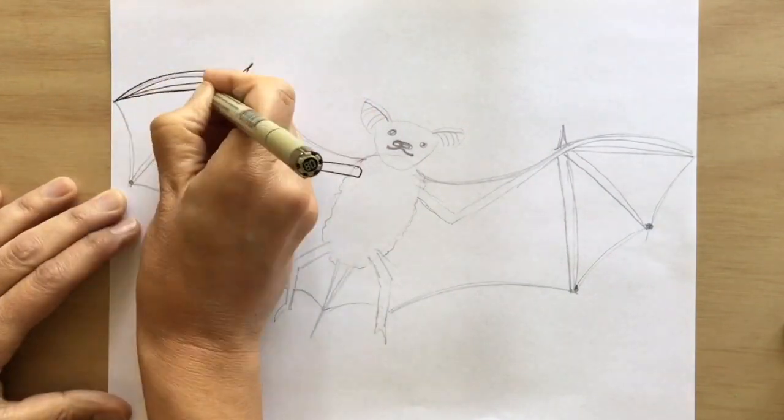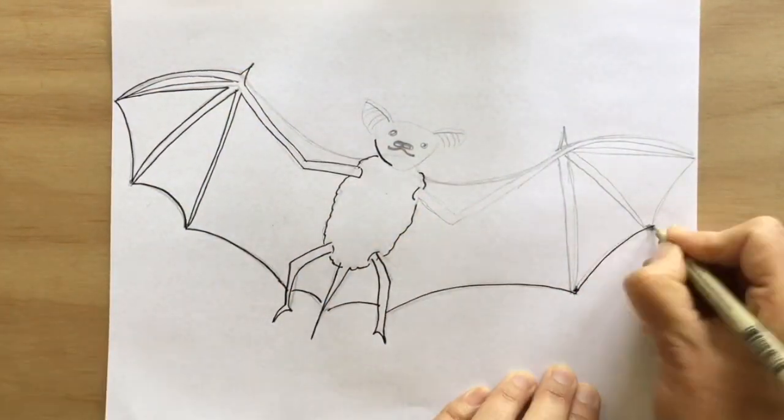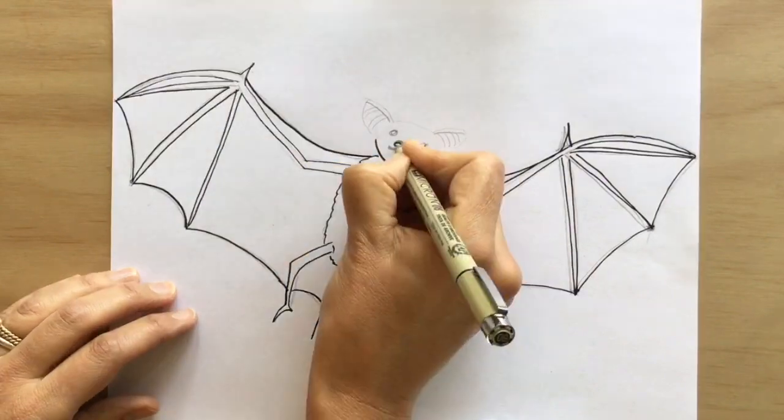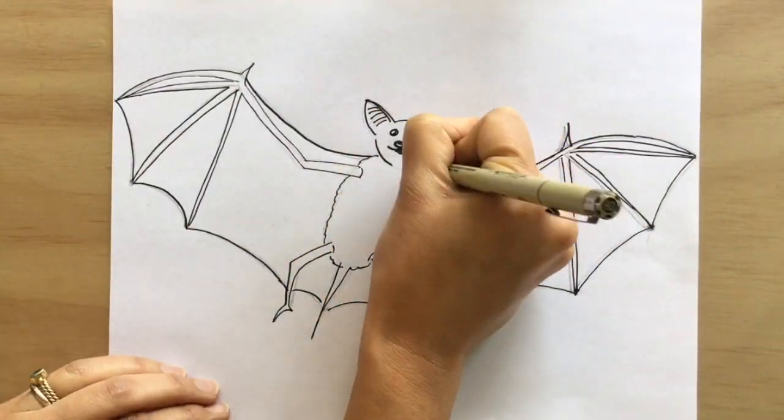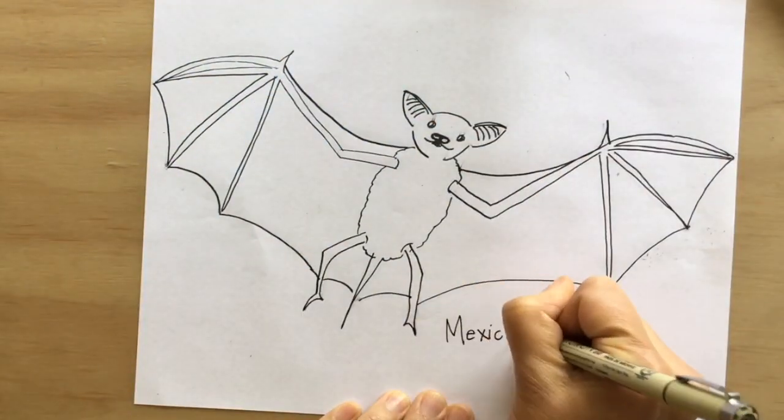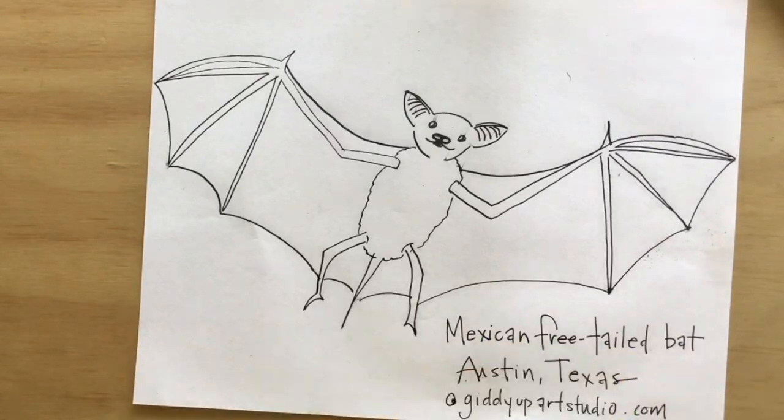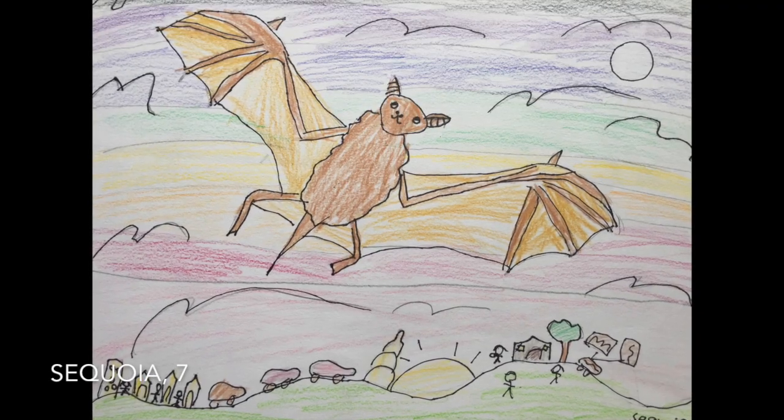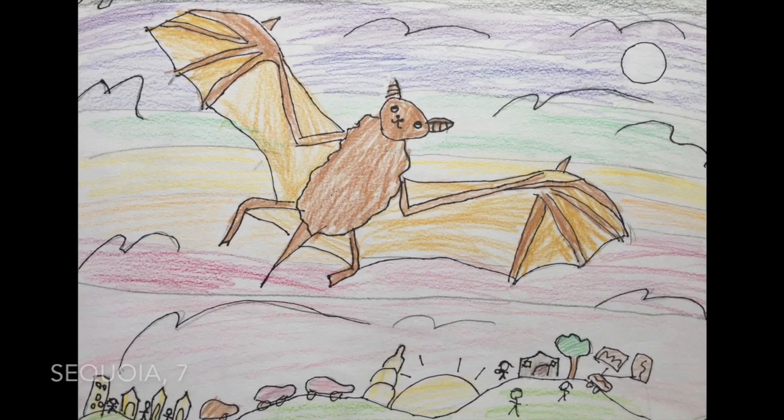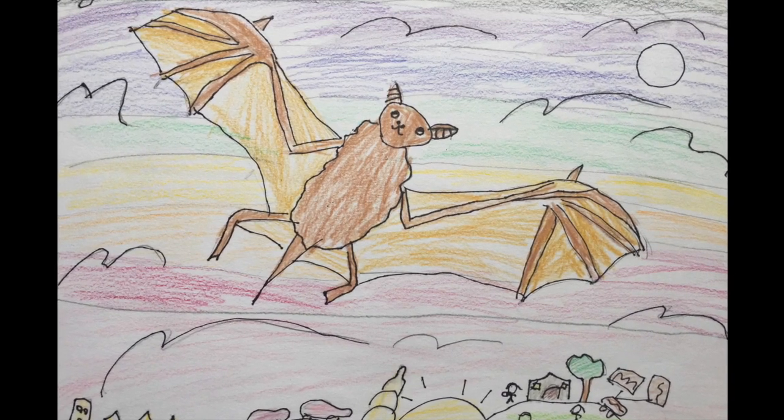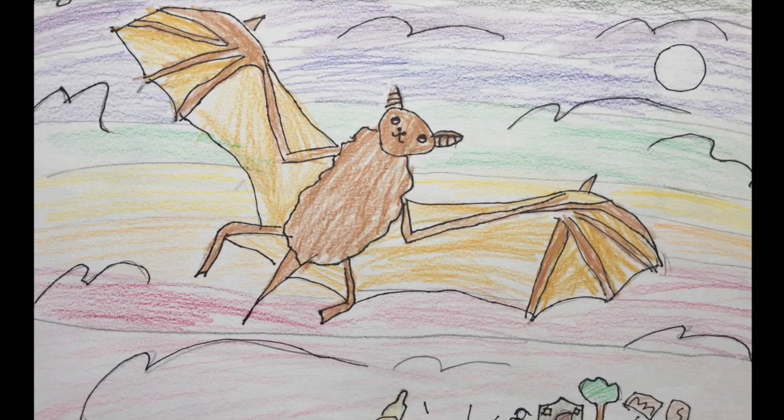The Mexican free-tailed bats winter in Mexico and travel to Austin each year to make a summer home under the famous bridge. They help make Austin and our world a better place to be. In June, when populations are the highest, there can be up to 1.5 million bats leaving their bridge roofs to eat 10,000 to 20,000 pounds of insects a night.